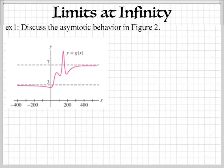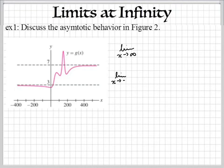Today we're going to look at limits that go to infinity. Limits can go to infinity in two different directions. We can have a limit that goes to positive infinity, so going towards the right, and we can also have a limit as x is going to negative infinity, so that's going off to the left.